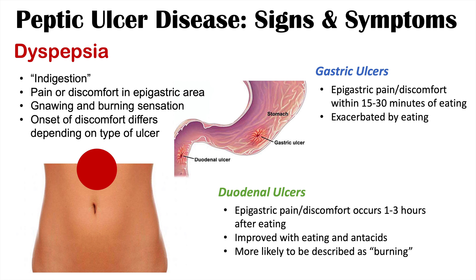Duodenal ulcers are more likely to be described as a burning sensation. Patients with duodenal ulcers oftentimes have a relapsing, remitting course — they have symptoms for a period of time, and then those symptoms go away for a period of time, a waxing and waning pattern. Another important point is that patients with duodenal ulcers can have interrupted sleep. If gastric contents reach the duodenal ulcer a few hours after eating, the patient may have gone to bed and can be awoken from sleep by symptoms.